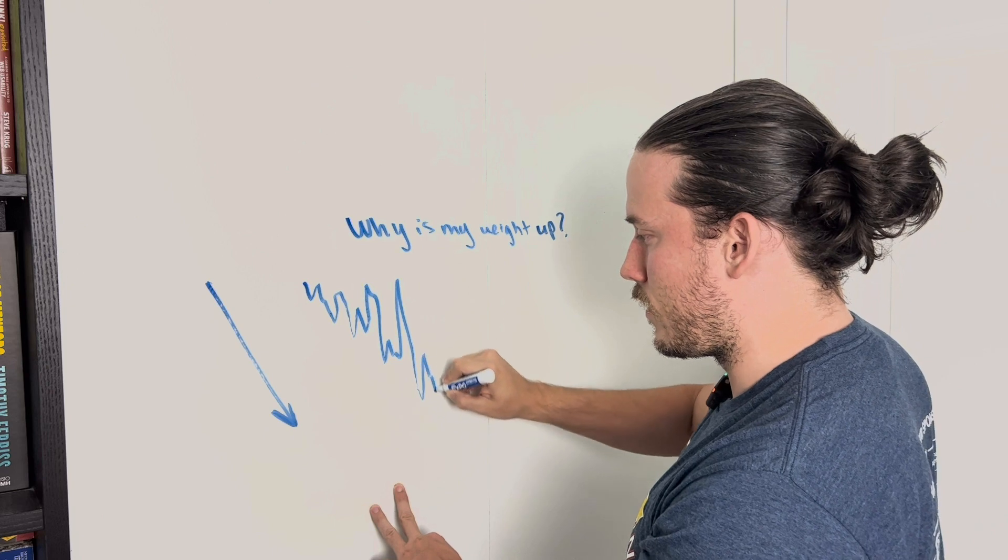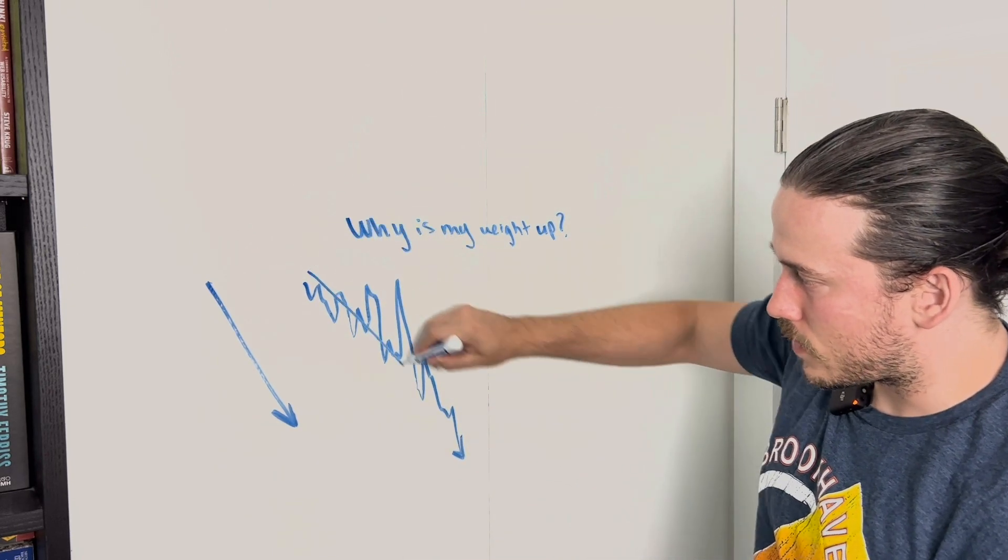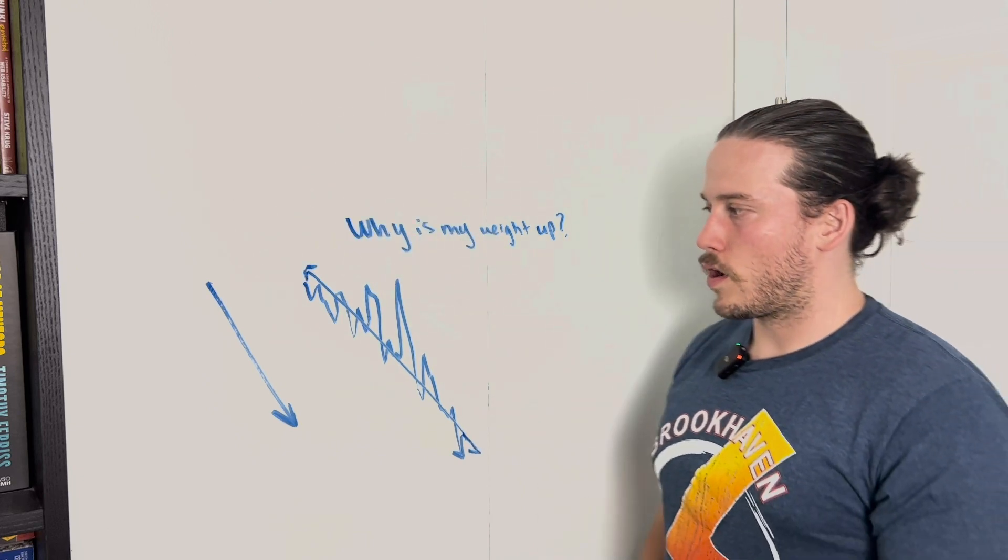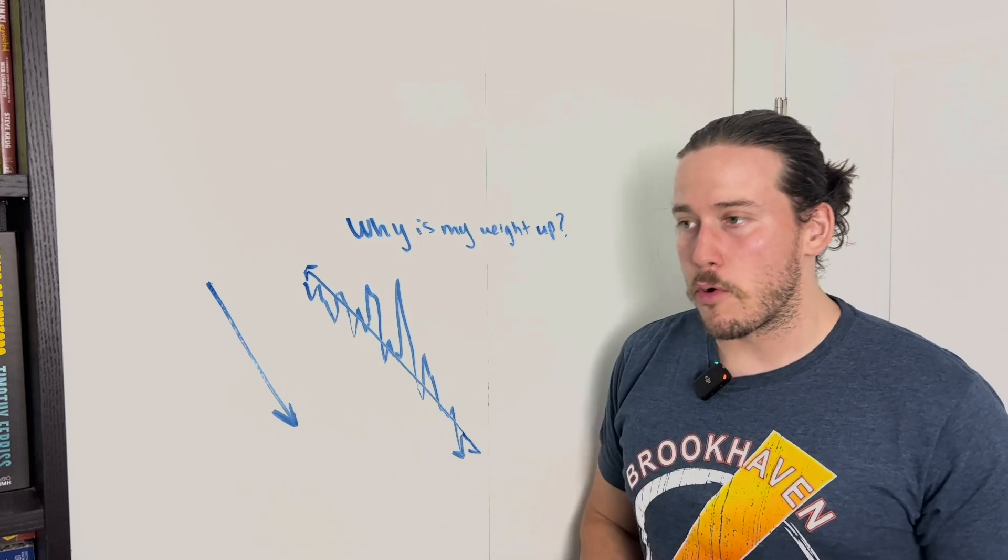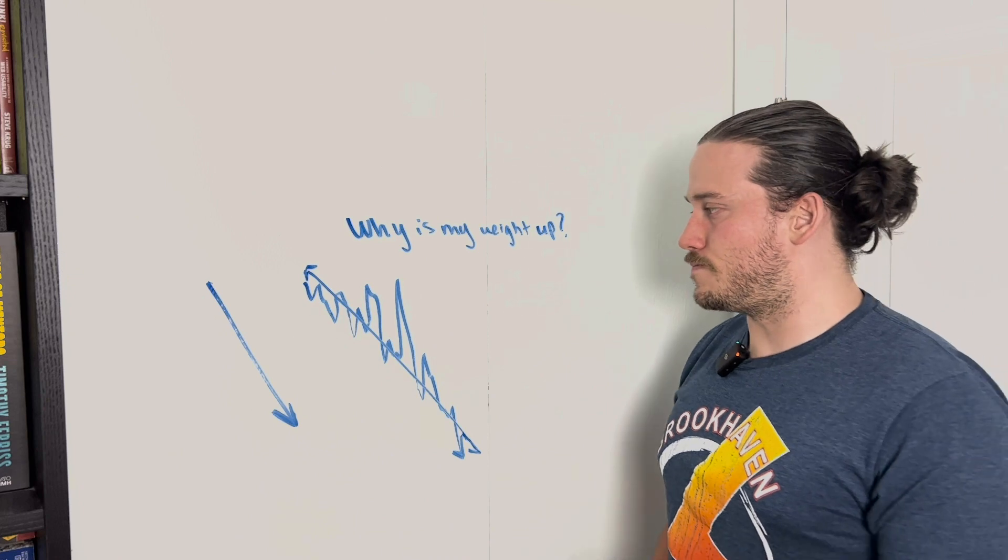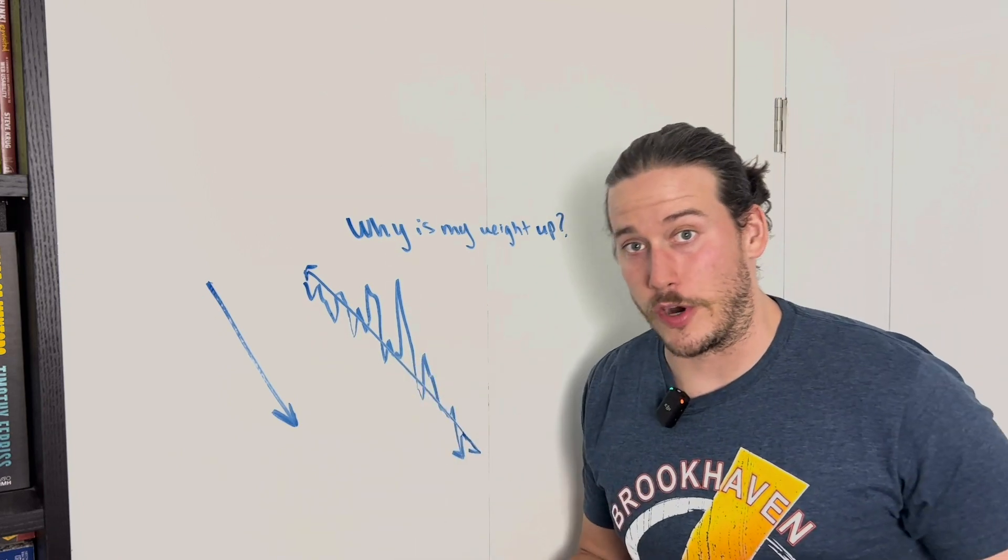So what does that tell us? That tells us that overall we're up and down, but we think it's going to be this. We think that every day it's going to be a little bit more weight down, a little bit further from where we were and closer to our goal.